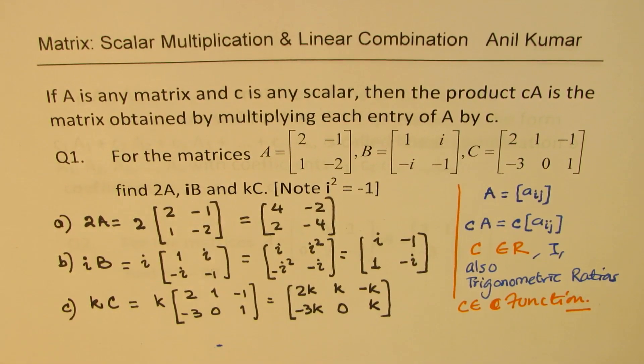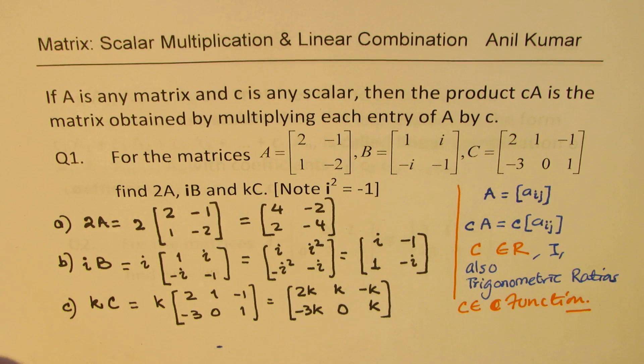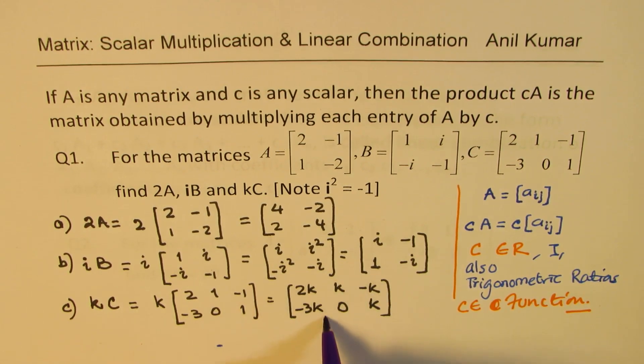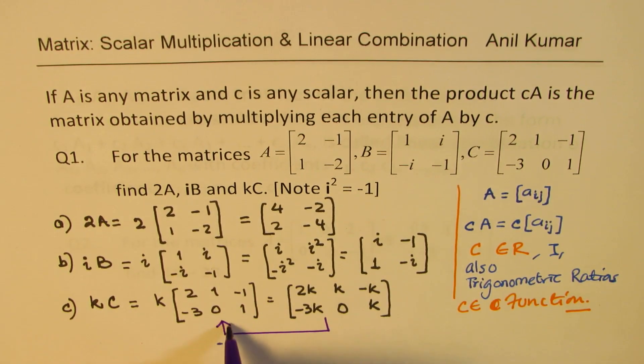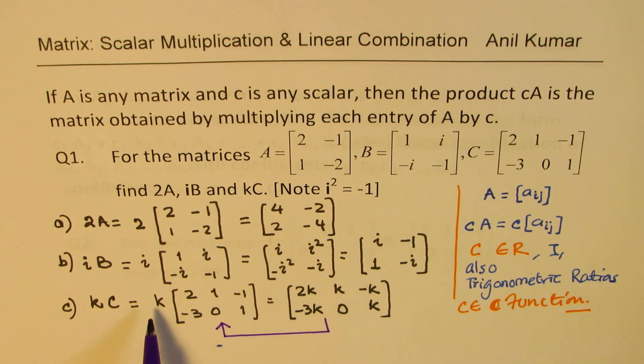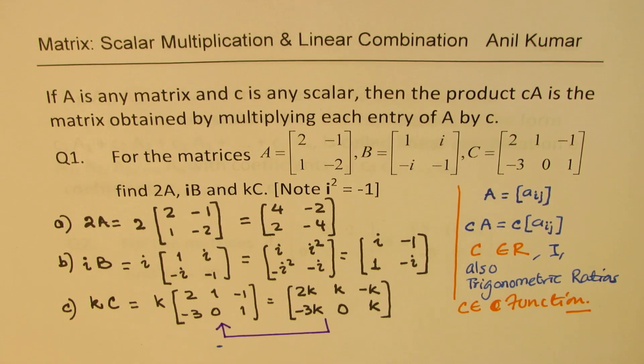So what we get here is 2k, k, minus k, minus 3k, zero and k. So that is the step. Now this will also tell you that we could have gone the other way. So sometimes you may have a matrix like this and you can actually simplify this and factor out k. That is the kind of application which we might just use a couple of videos from here.